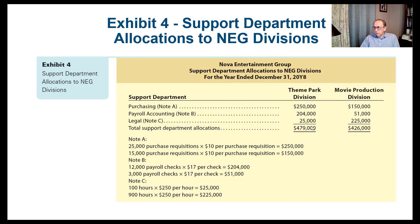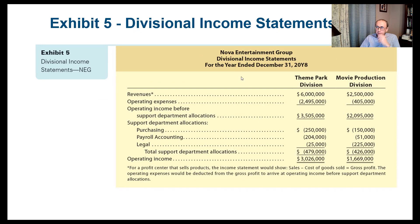Now we have the divisional income statement for both divisions. We show revenues, subtract operating expenses to get operating income before support department allocations. Then we subtract the support department allocations — $250,000 for purchasing, $204,000 for payroll, and $25,000 for legal — to get a final operating income of $3,026,000 for the theme park division. We do the same for the movie production division. In the next video, we'll take it to the next level: investment centers.